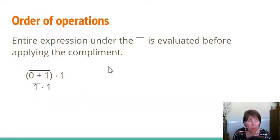First, you do what's under the complement, which is zero plus one, and the result of that is one. Once you compute that, then you can take the complement. The complement of one is zero, and you multiply zero times one, and you get zero.